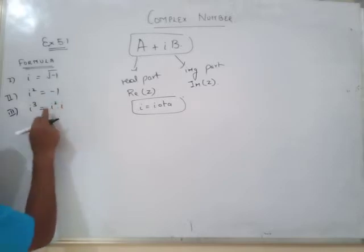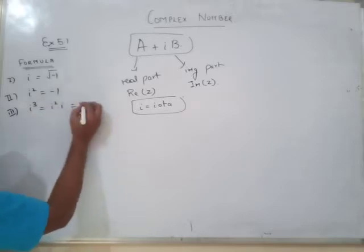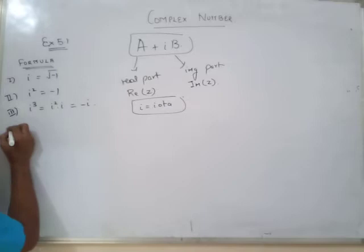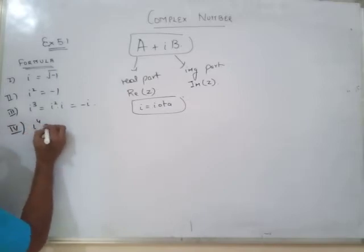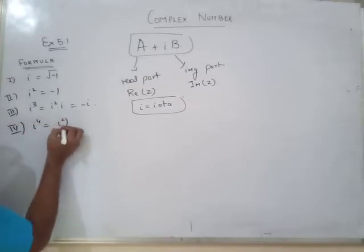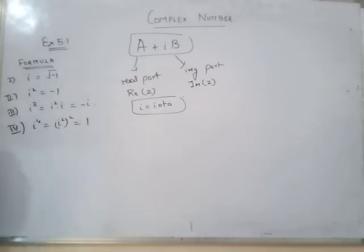Iota can be written as root of minus 1. Iota into iota gives iota squared. The value of iota squared is minus 1. This gives us iota cubed as minus iota. The fourth formula: iota to the power 4. Its value is 1.